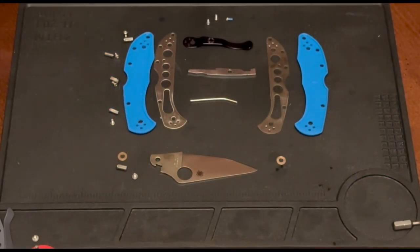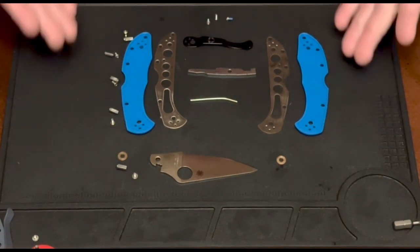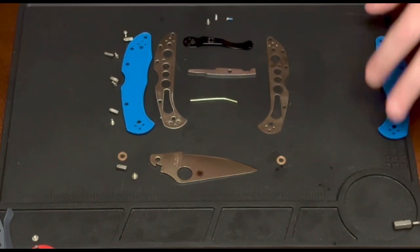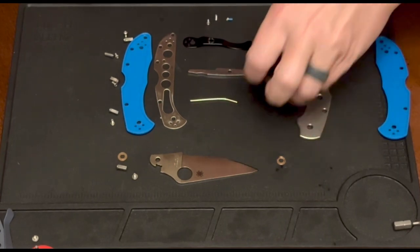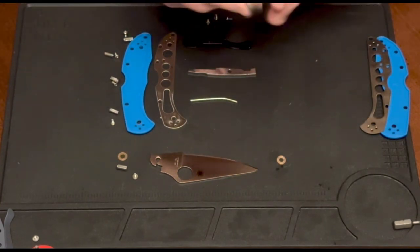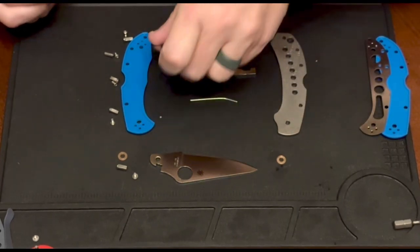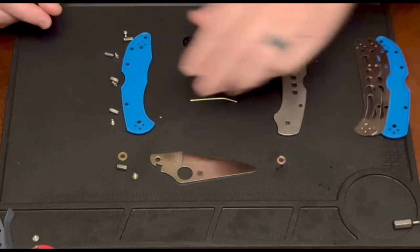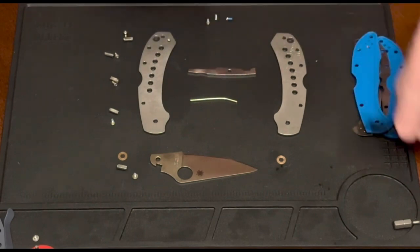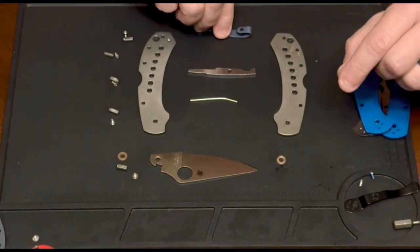So before we have now taken it apart, done our cleanup, before we start putting it back together, I just wanted to show the breakdown on the original. So what we're going to do here is we're not going to need the liners because the Lynch Northwest pieces are solid metal, no cut out for the liner. So we're going to get rid of these liners and the FRN. Get rid of our pocket clip, since we have the Lynch Northwest deep carry pocket clip. We're going to bring that in.